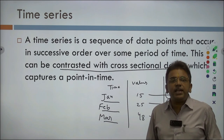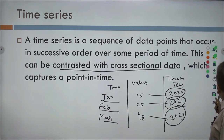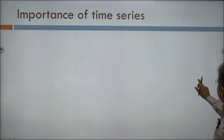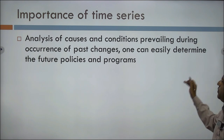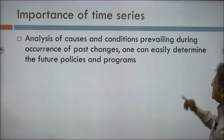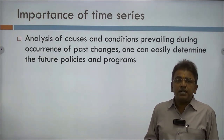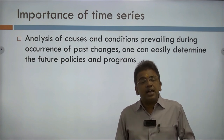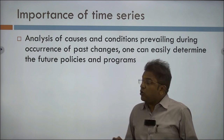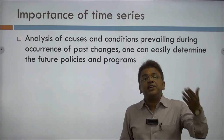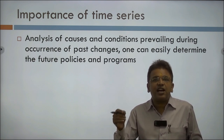It is very important for any businessman to get the best results with the help of time series. The first importance is analysis of causes and conditions prevailing during past changes — one can easily determine future policy and program. What has occurred in the past can be easily determined by time series, and by the help of this, you can predict the future. For example, you can say that in every October, certain diseases are going to occur.